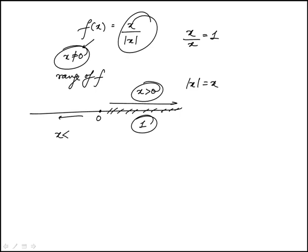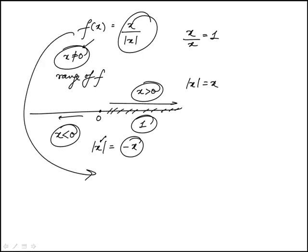Next, consider when x is less than 0. In that case, absolute value of x is negative x. Remember that x itself is negative, so this number is still positive. In this case, the function is x over negative x, or negative 1. So all these negative values of x give us an output of negative 1.